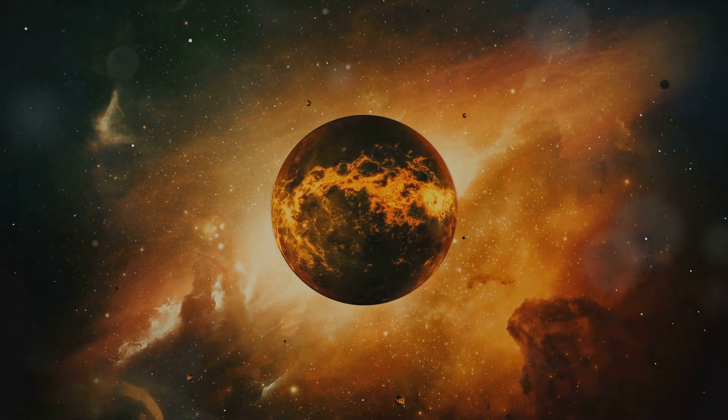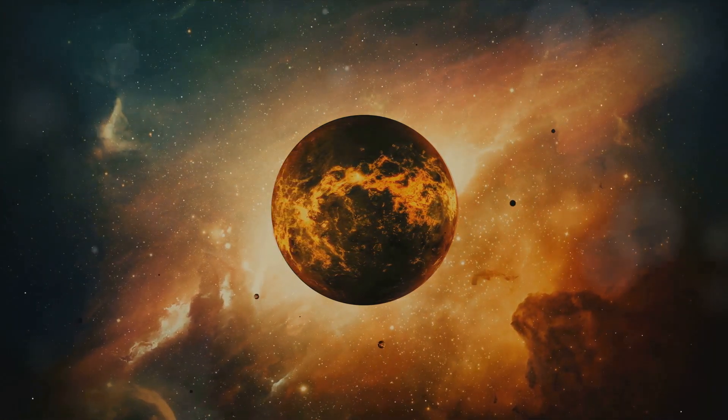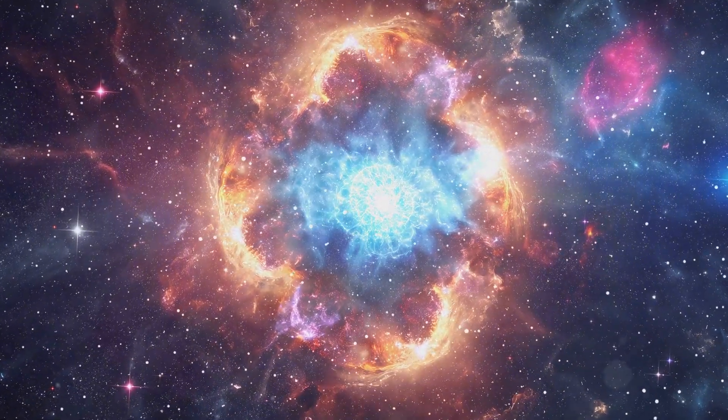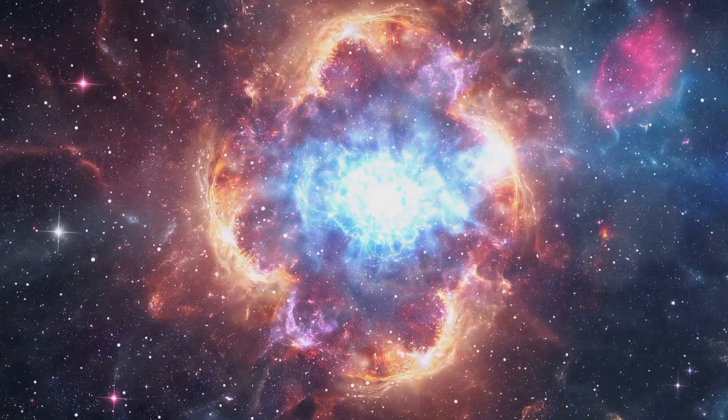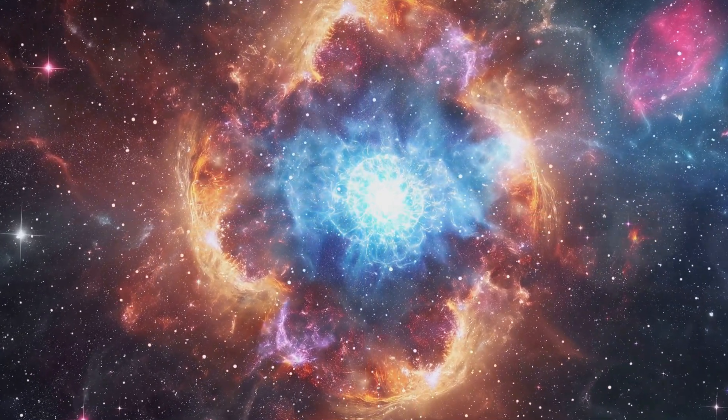These first stars, known as Population 3 stars, lived fast and died young. Their immense size meant they burned through their nuclear fuel at a furious rate, exhausting their hydrogen supply in just a few million years.